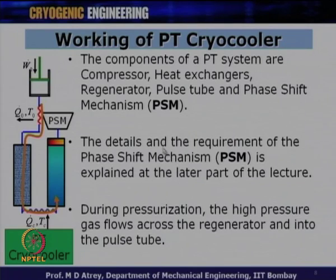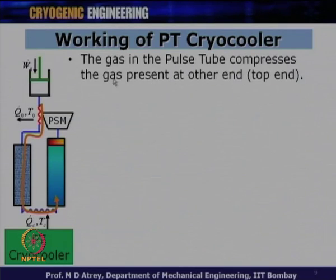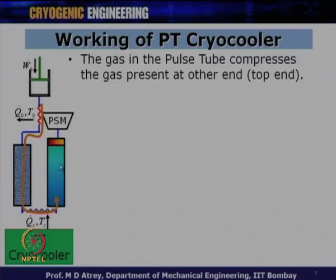How do we get cooling? The piston comes down and pressurization happens; the piston goes back and depressurization happens. During pressurization, high-pressure gas flows across the regenerator and into the pulse tube. The after cooler takes the heat of compression, the gas enters the regenerator, and then enters the pulse tube. The gas in the pulse tube compresses the gas present at the other end, which was initially at charging pressure. This compression results in a rise of temperature at the top end.